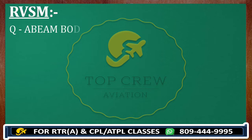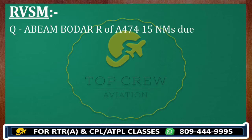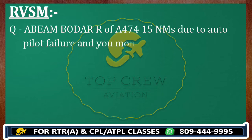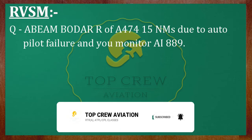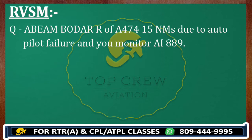Write off Alpha 474, 15 nautical miles due autopilot failure and you monitor Air India 889F. So guys, whenever you do not have contact with ATC it means your transmitter is failed. There can be three situations. In RT exam we always consider our transmitter is not working but the receiver of ATC is working always.